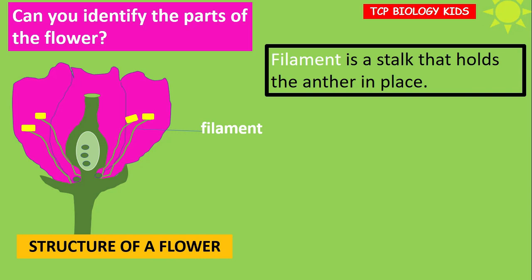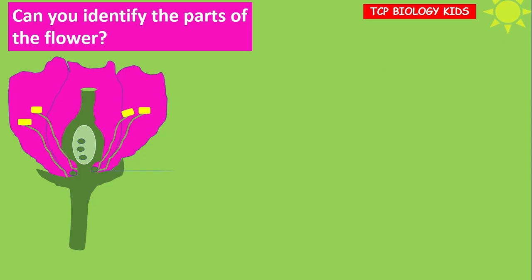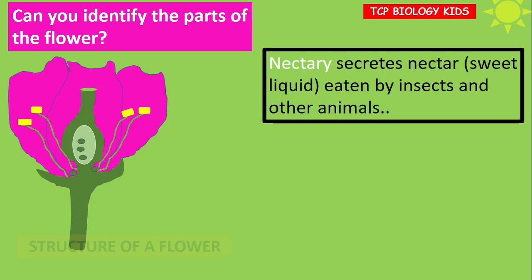The filament is a stalk that holds the anther in place. What color does the anther have in the picture? The nectary secretes nectar, which is a sweet liquid eaten by insects and other animals.